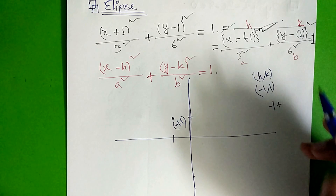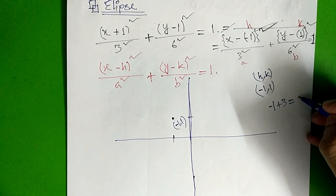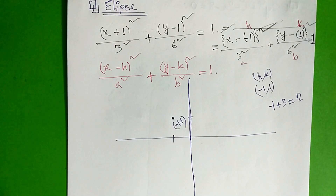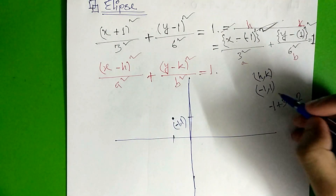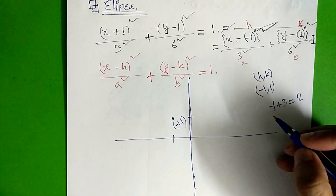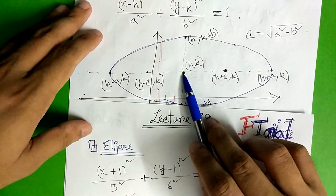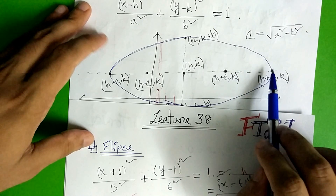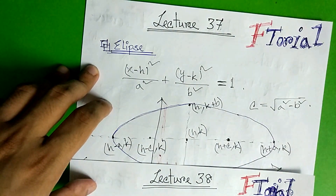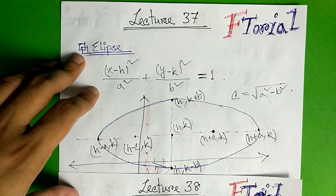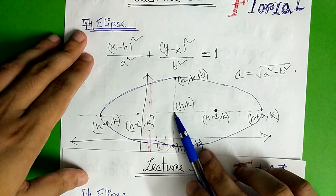The center point h is minus 1, and a equals 3, so we get coordinate values of 2 and 4. Then b equals 6, so the vertical points are at 1 and negative values accordingly.